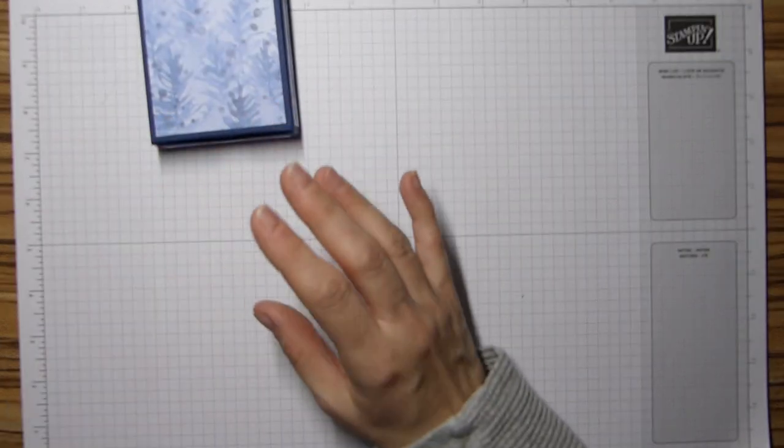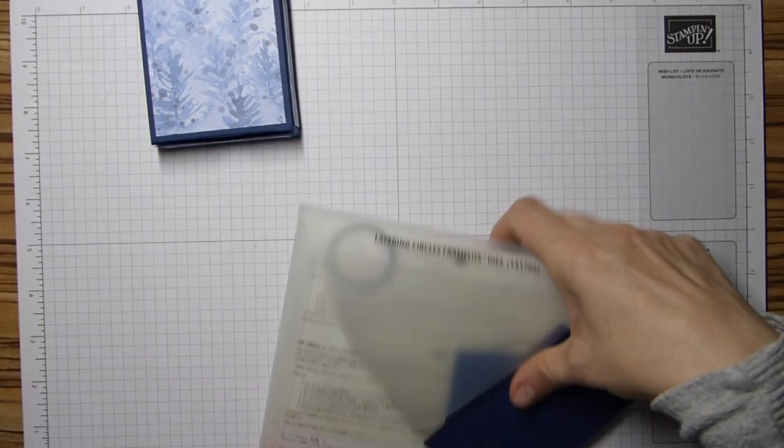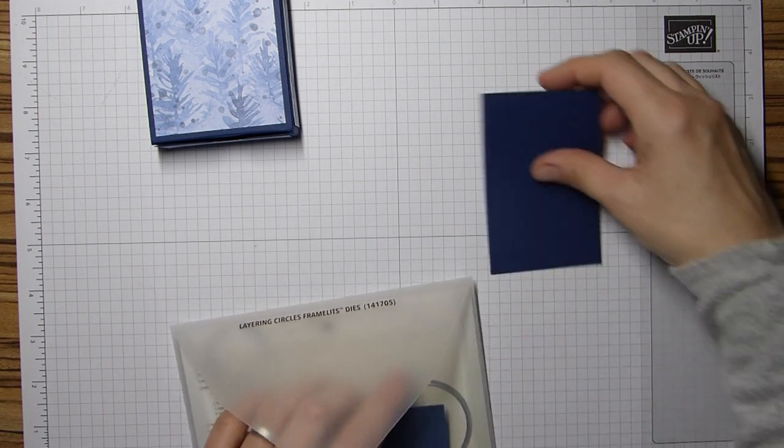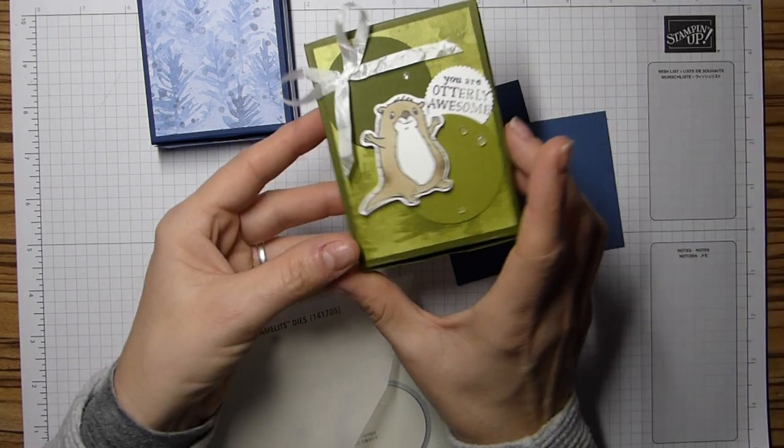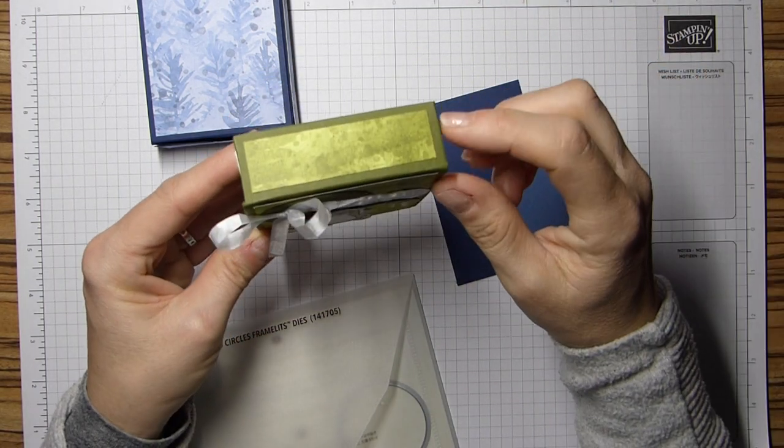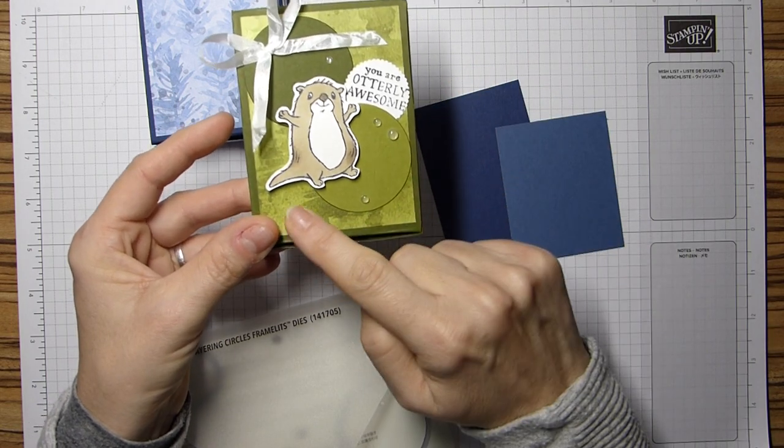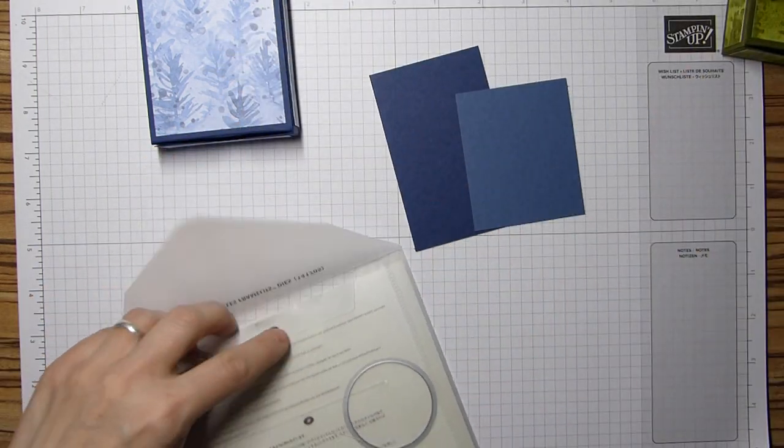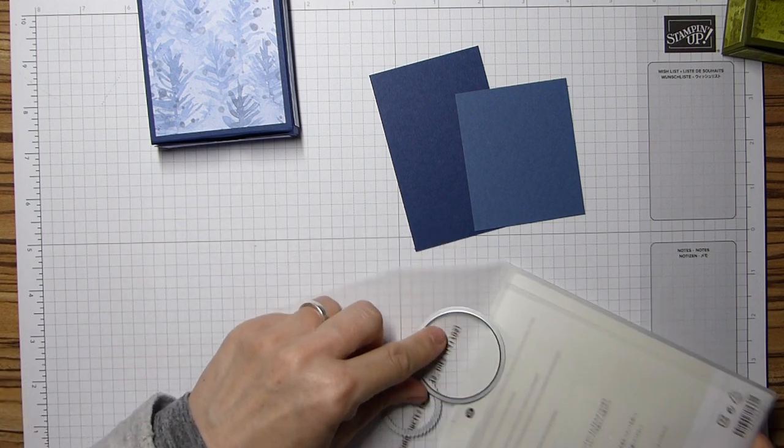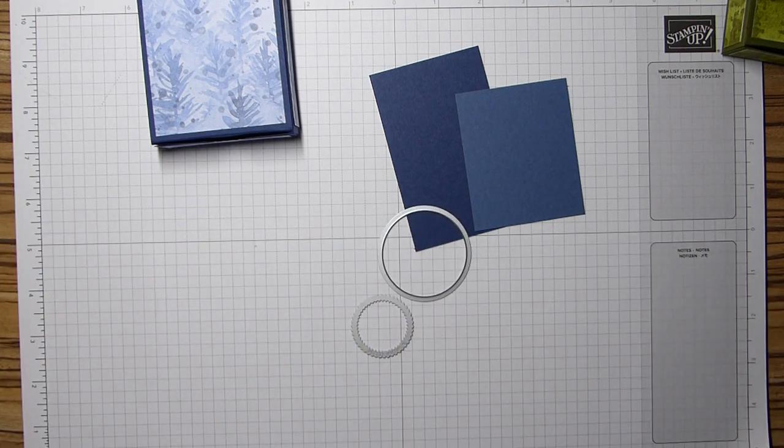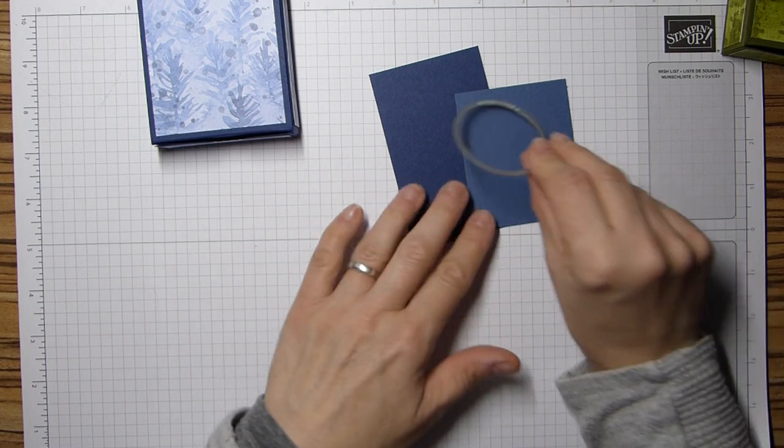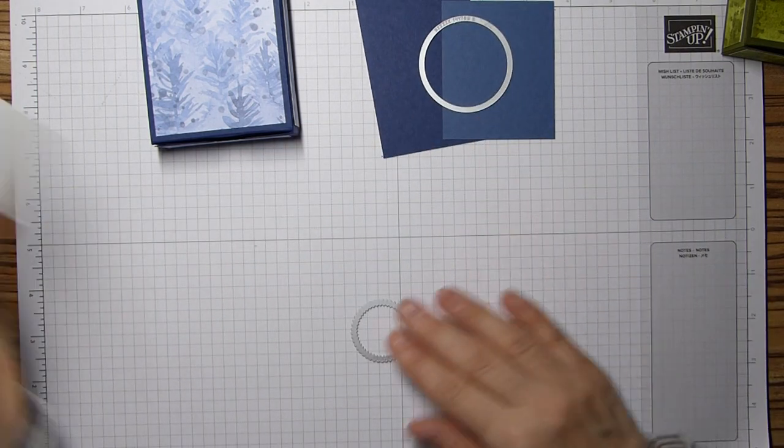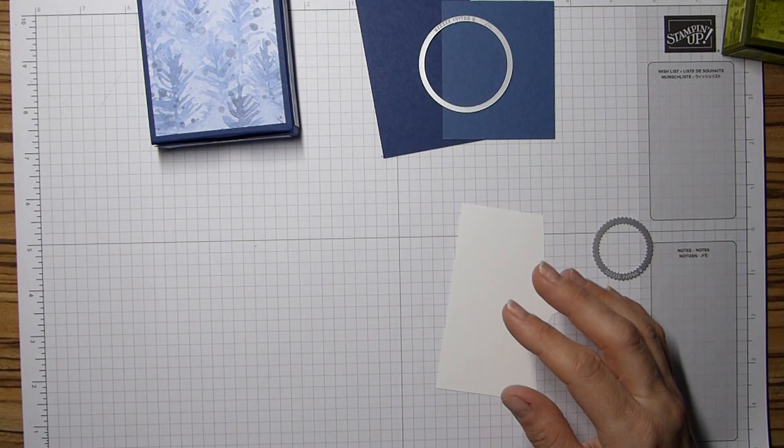And then to decorate it. I've got my layering circle framelits. And I've gone two tones. So, again mossy meadow to coordinate with the base. And then this is old olive that goes with the DSP. This one is very similar. So, I've kept my circles separate. So, this is for those. And then I've got some basic white here.